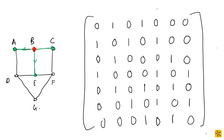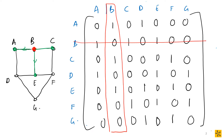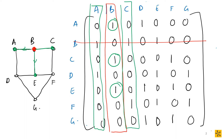We know that rows and columns represent vertices. Looking at vertex B in the matrix, we cancel out the diagonal entry since we don't care about self-loops. Then we look for all adjacent vertices — in this case B is connected to A, C, and E. So we activate A, C, and E.